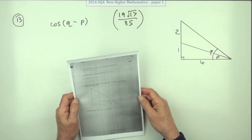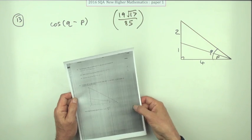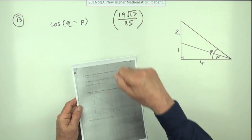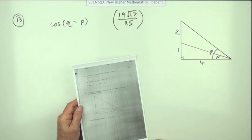Number 13 from the 2016 New Higher Maths Paper 1 where we have five marks for a compound angle question. It gives you the answer so you know if you've got all your five marks.